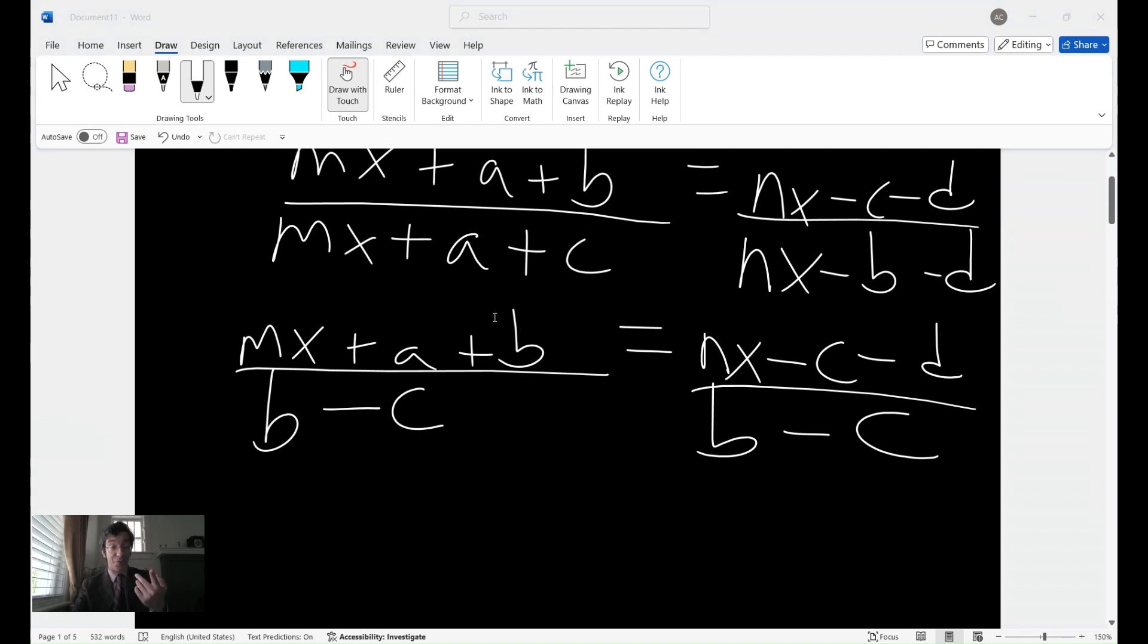So far, so good. Now, because we have fractions here, you should all be familiar with if you're watching this video, you can get rid of fractions when you multiply each side, in this case, by the denominator, b minus c. If you multiply both sides by b minus c, you get m x plus a plus b is equal to n x minus c minus d. Right?